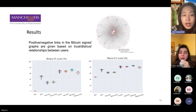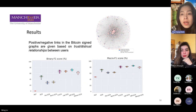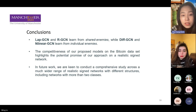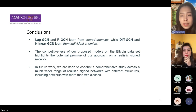Our model provides promising potential to apply on realistic signed networks. An interesting observation is that LabGCN learns from the global enemy, while our models Deep GCN and Non-Linear GCN learn from the individual's enemy. In future work, we would like to conduct a more comprehensive study across different realistic signed networks with different structures, and also examine our model on networks with more than two classes. This is the end of my presentation. Thank you for listening.